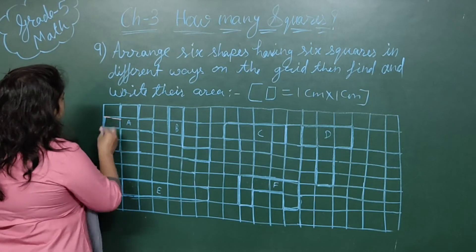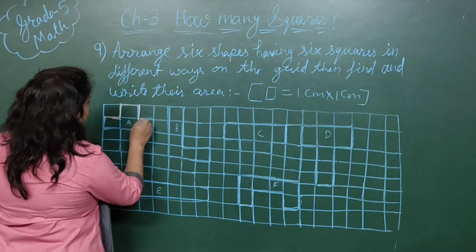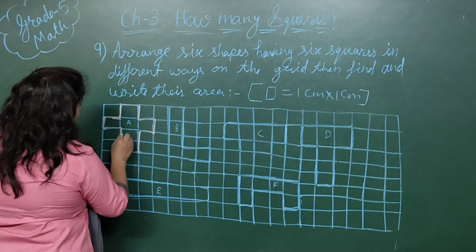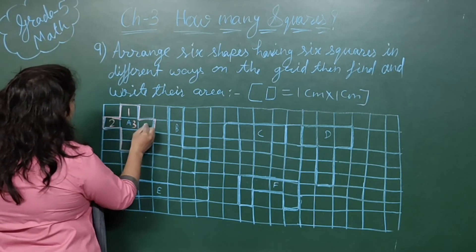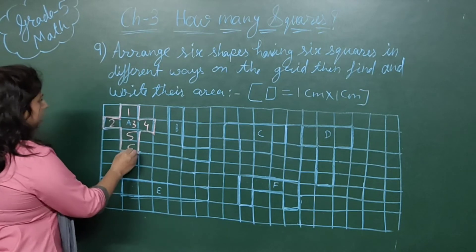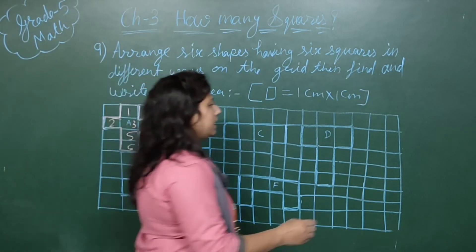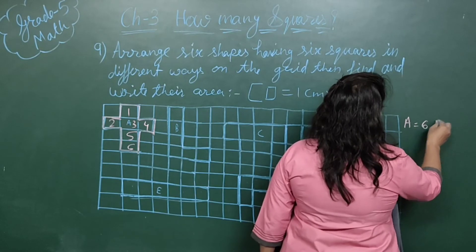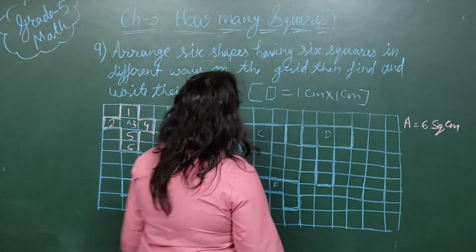In your workbook, the first picture is given. You can count easily: 1, 2, 3, 4, 5, 6. It means it has an area of 6 square centimeters. Picture A has a 6 square centimeter area.